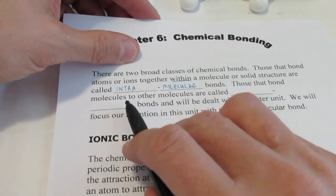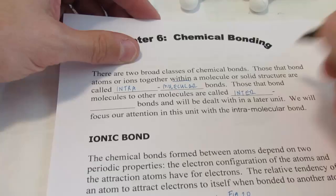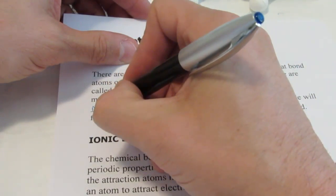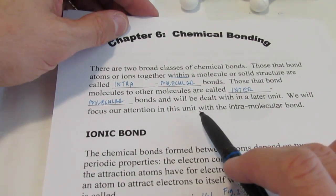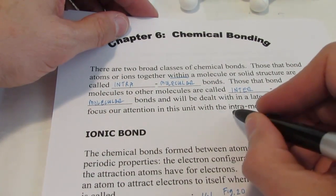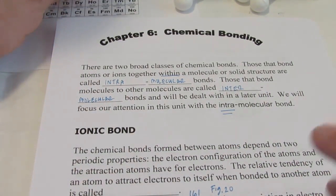Those that bond molecules to other molecules are called intermolecular bonds. Now let me just talk a little bit about the difference between the two. By the way, we're going to spend most of our time talking about the intramolecular bond.